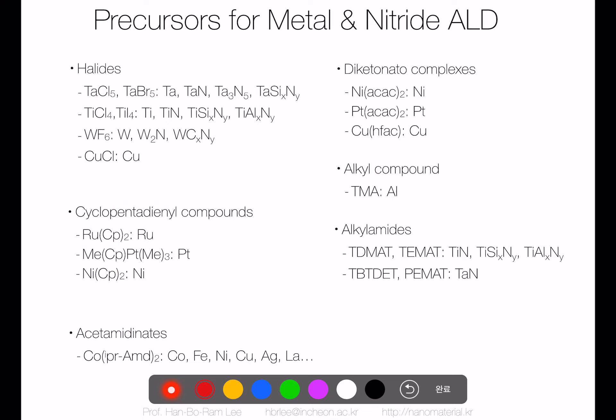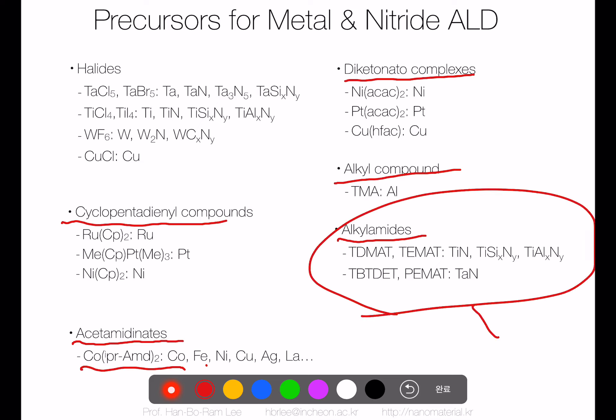Halide precursors like TiCl4 and SiCl4 have very high reactivity and vapor pressure, but they are very corrosive — if used, you have to be careful as the chamber can rust after many ALD cycles. Cyclopentadienyl compounds like metallocene, nickelocene, cobaltocene, and ferrocene have been developed for CVD metal processes. Other types include acetamidinate, beta-diketonate, alkyl, and alkylamide precursors like TDMAT and TDMAS, which are actively used for high-k metal oxide deposition.